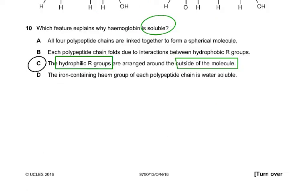Question ten asks which feature explains why hemoglobin is soluble. Solubility depends on hydrophilic R-groups. The answer is C: the hydrophilic R-groups are arranged around the outside of the molecule. The question asked specifically about solubility, not the overall structure of hemoglobin. Option B is wrong because hydrophobic R-group interactions cause folding, and D is wrong because the heme group is not water soluble.